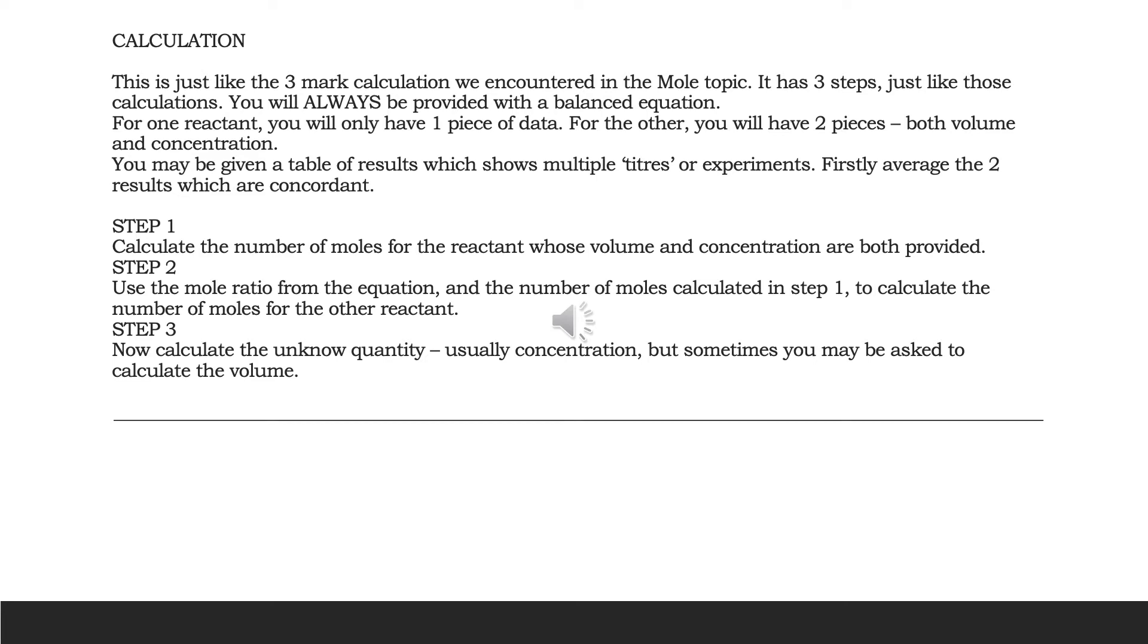So the calculation itself is actually pretty similar to the one that we encountered back in the mole topic. It has three steps, just like those calculations. You will always be provided with a balanced equation. You'll be given one piece of data either a concentration or a volume for one of your reactants. For your other reactant you'll be given two pieces of data the concentration and the volume. Now there's a couple of different ways in which this can be laid out. You might have to average your two concordant results first or that might be given to you. Now once you've done that you've got your balanced equation, you've got one reactant with one piece of data, the other reactant with two pieces of data. That's your starting point.